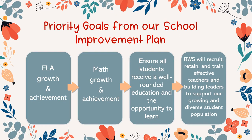Knowing our data and where we want to go, we use that data to set priority goals from our school improvement plan every year. Our four priority goals this year were ELA growth and achievement, math growth and achievement, ensuring all students receive a well-rounded education and the opportunity to learn, and recruiting, retaining, and training effective teachers and building leaders to support our growing and diverse student population.